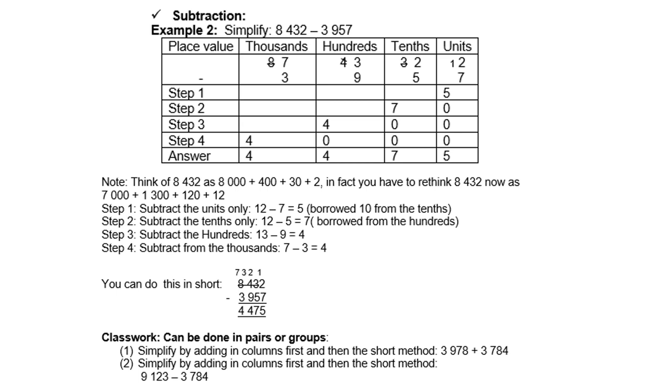A much quicker way of doing it is rather to do it in columns. You'll say 2 take away 7, not possible. I must go to the 3 and borrow from the 3. Then there's 2 left. Therefore, it is now 12 minus 7, which is 5.